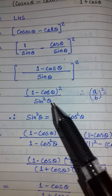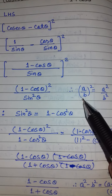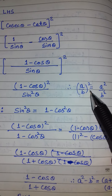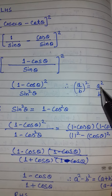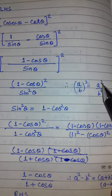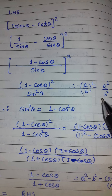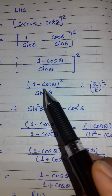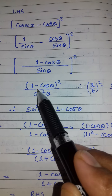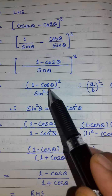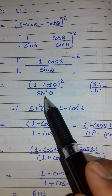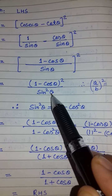अब यहाँ पर एक identity लगाएंगे: a upon b का whole square को हम a² upon b² represent कर सकते हैं। As it: (1 − cos θ)² upon sin² θ।